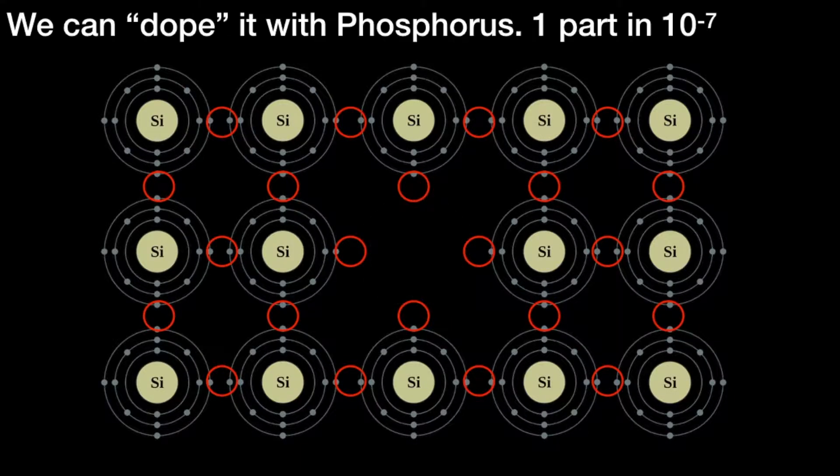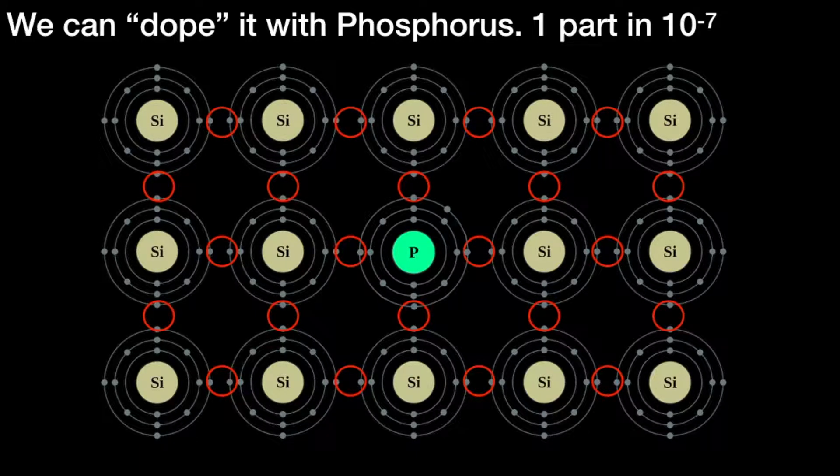But we can dope the silicon lattice with another element like phosphorus. The amount of doping is very small, typically something like one part in 10 to the 7, or one atom in 10 million atoms is the new doping substance like phosphorus.